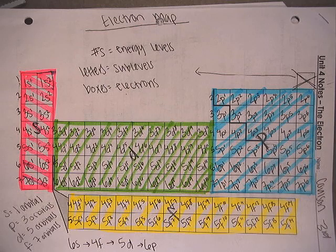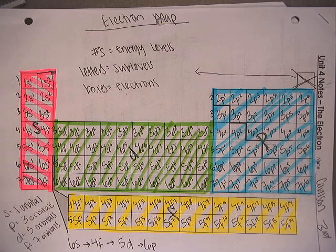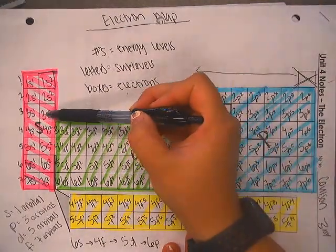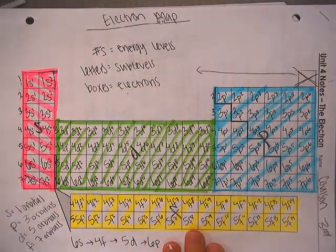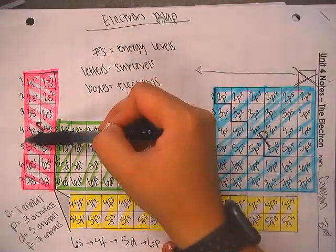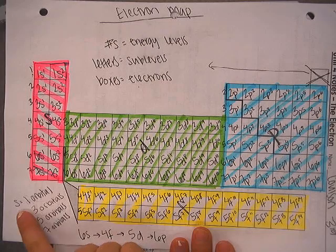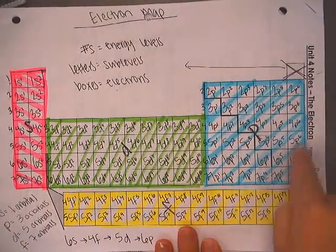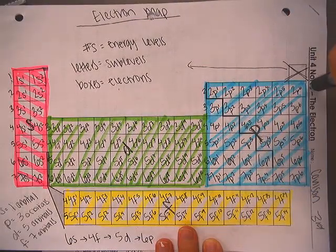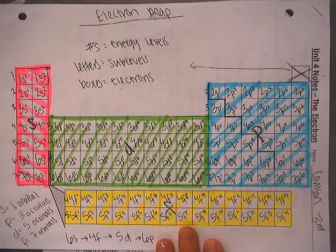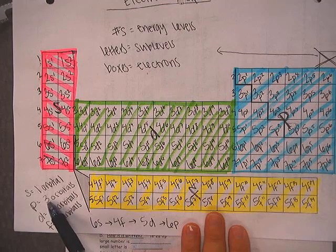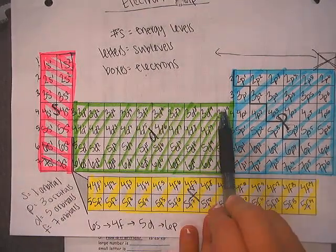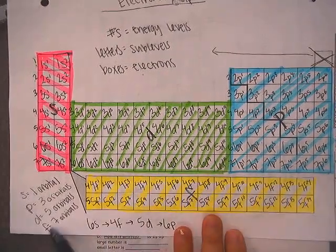You need half the number of orbitals as you have electrons, because two electrons can fit in each orbital. So since any energy level within the S sub-level has up to 2 electrons, you need just one orbital. For P, 6 electrons fit in 3 orbitals. Since D has up to 10 electrons, we need 5 orbitals. And since F has up to 14 electrons, it needs 7 orbitals.